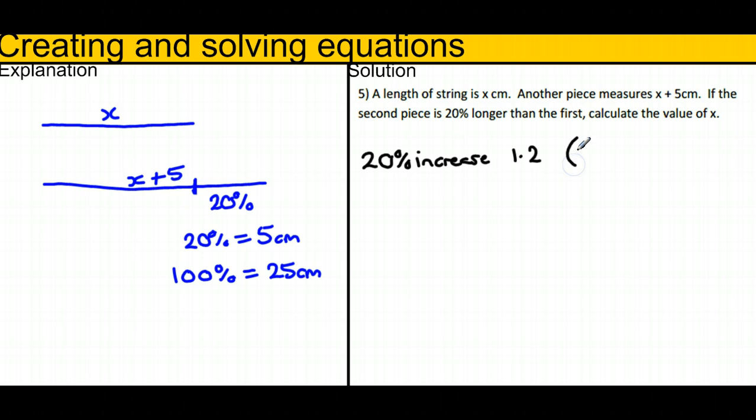And the reason for that is that's 120% as a multiplier, which is 20% larger than your original. So, x times 1.2 is going to give us x plus 5. So you can also create a little equation like that.